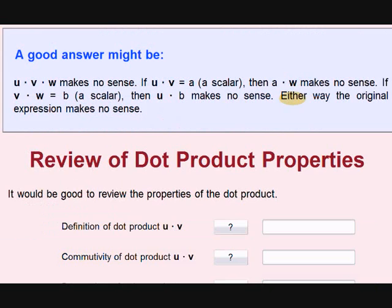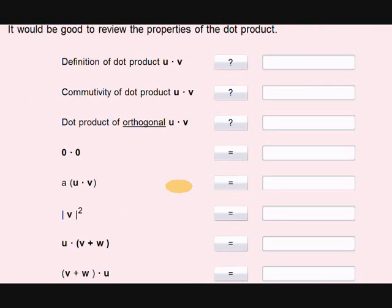Commutative product property? U dot V equals V dot U. Very good. What is orthogonal? Zero. Good. What is zero vector? Zero scalar. Good.